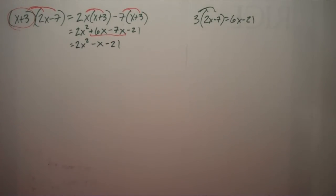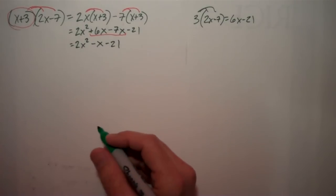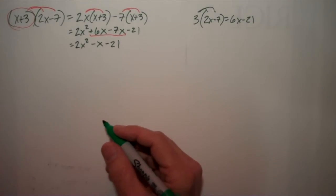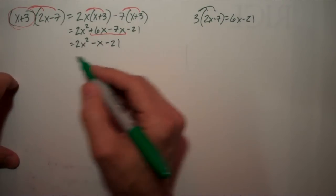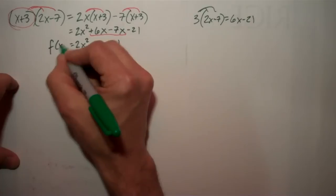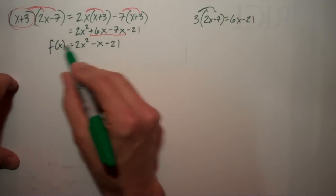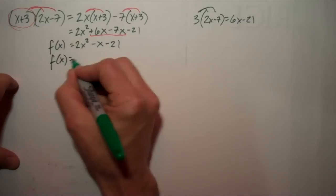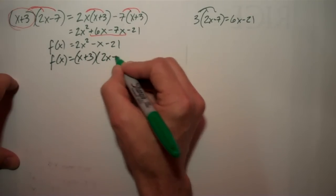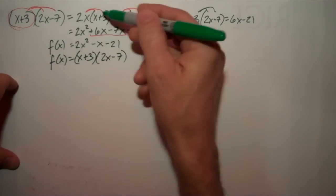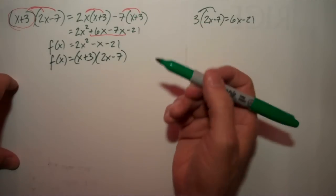Okay, now, you may be asking yourself, how do I know if I'm right? Well, let's test it. Let's say, if this is f of x, then I can define f of x to be this, or I can define f of x to be x plus 3 times 2x minus 7, right? Because I just showed that they're the same thing.